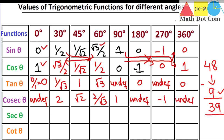Secant is the reciprocal of cos values. Secant 0 is 1 divided by 1, which is 1. Secant 30 is 2 divided by root 3. Secant 45 is root 2 over 1, that is root 2. Secant 60 is 1 by 2 inverted, so it will be 2. Secant 90 is 1 divided by 0 — undefined. Secant 180 is 1 divided by minus 1, which is minus 1. Secant 270 is 1 divided by 0 — undefined. Secant 360 is 1 divided by 1, that is 1.